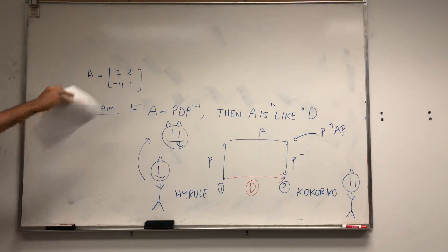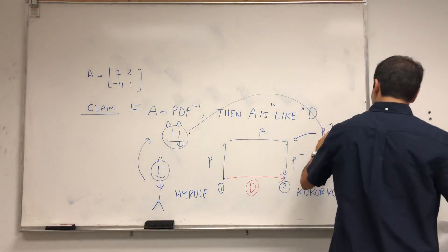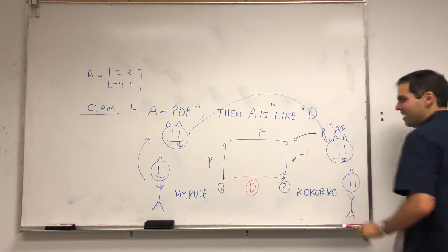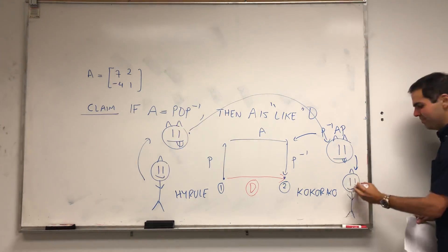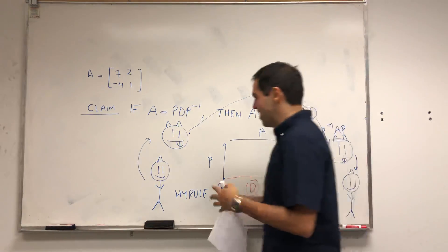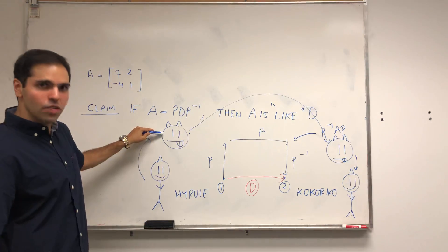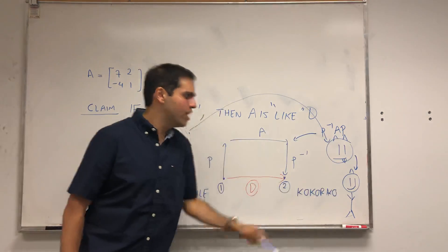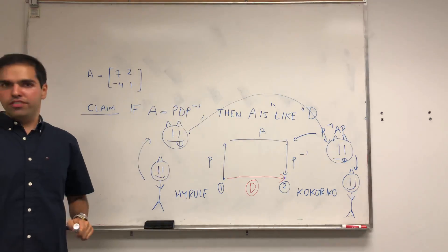Big bad wolf. And then you teleport yourself as a wolf. I'm still a wolf. And then you transform yourself back into Link. So this whole transformation or teleportation can be described as transforming yourself into a wolf, teleporting yourself as a wolf, and then transforming yourself back, which in this case is P inverse AP.